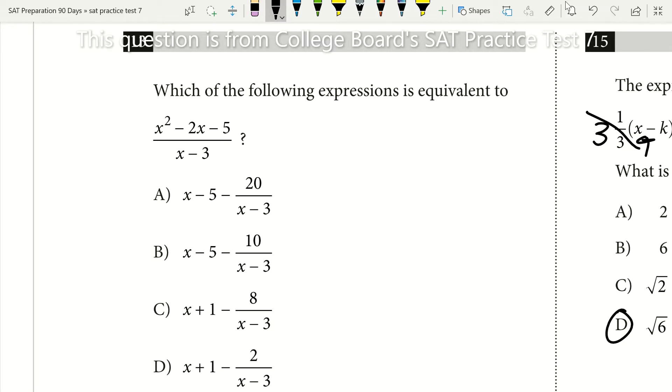Well if we take our numerator and let's call our numerator f of x. So let's say then f of x equals our numerator which is x squared minus 2x minus 5.